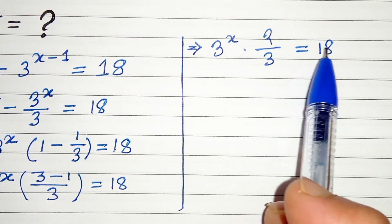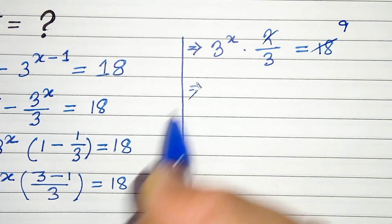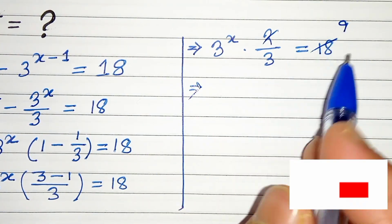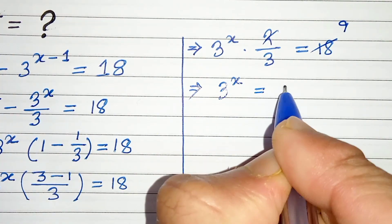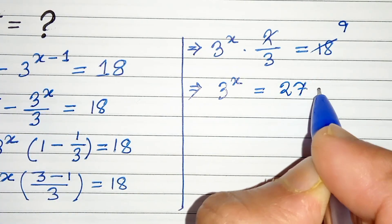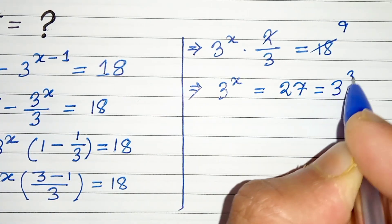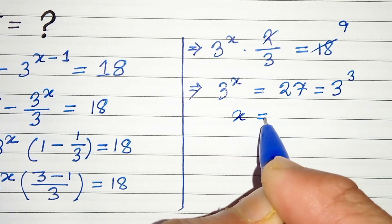Now if we divide 18 by 2 we will get 9, and this 3 will be multiplied with 9 which gives us 27. And 27 can be written as 3 cube. Therefore, if we compare both sides we will get x equals 3.